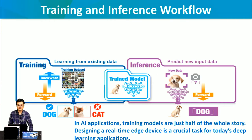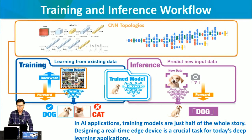The workflow starts from the training data set. We prepare the training data set and put it into deep learning topologies such as AlexNet and GoogLeNet. Then we train the model. After we get the trained model, we put it into the inference engine. Every time new data arrives, the inference engine performs deep learning inference and returns a new test result.